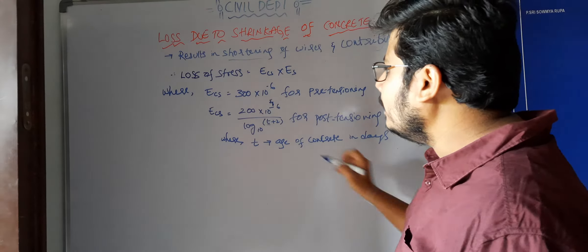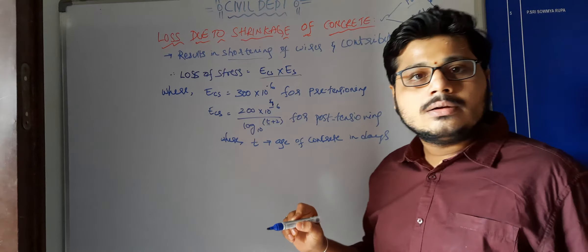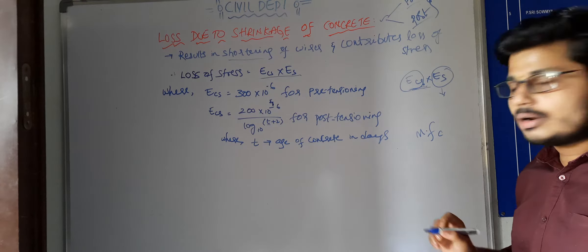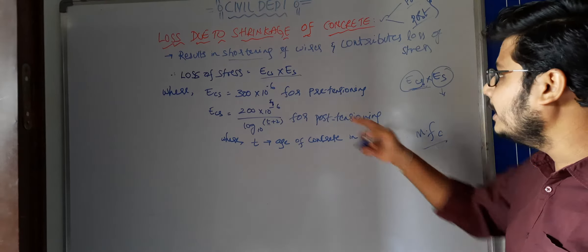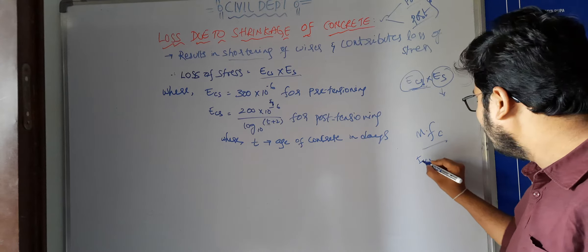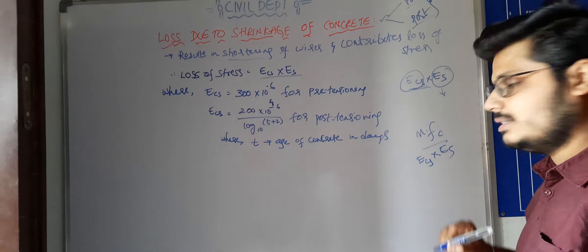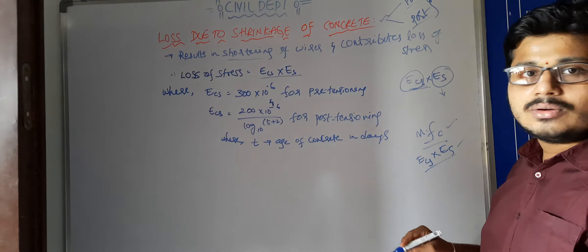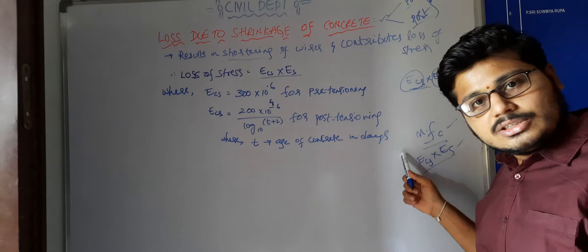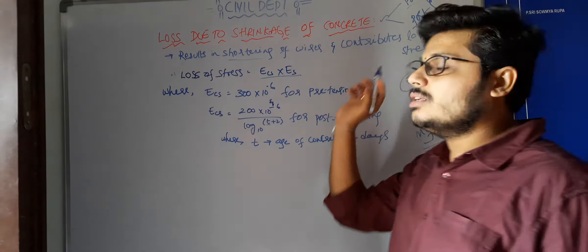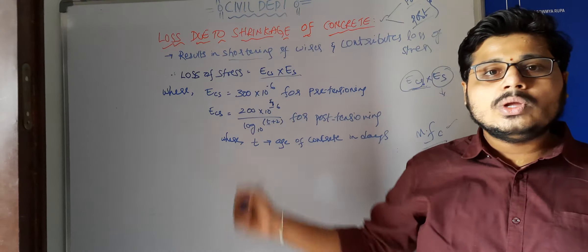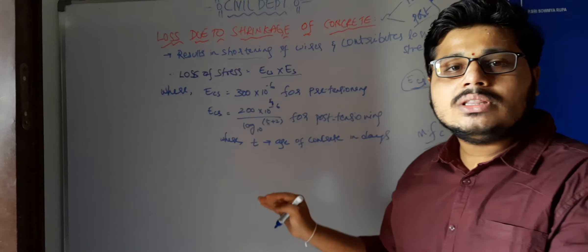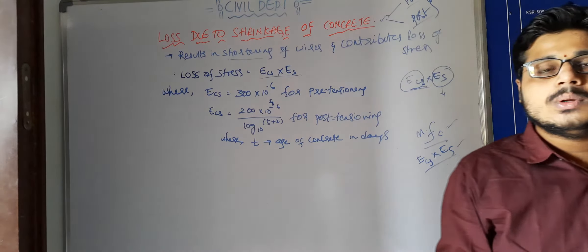This is the main formula to remember. For loss due to elastic shortening the formula was m × fc, but for loss due to shrinkage the formula is Loss = ECS × ES. While solving problems, you can calculate the ECS value using the given or assumed data.